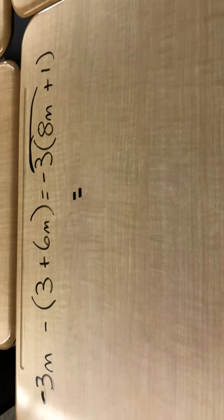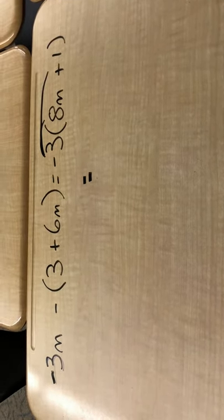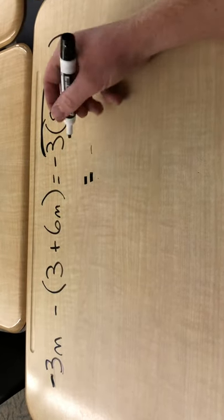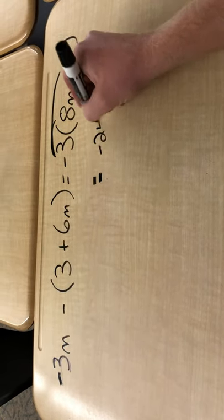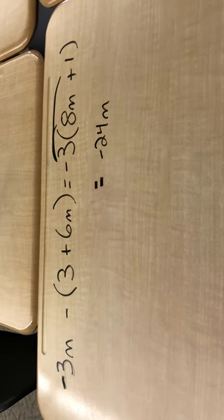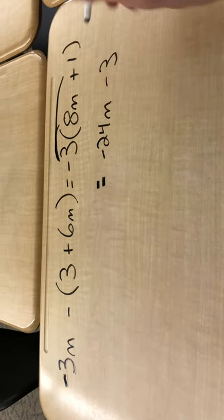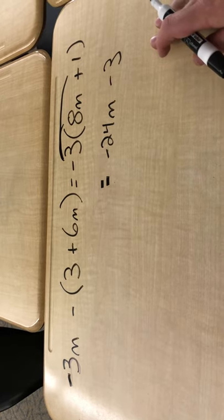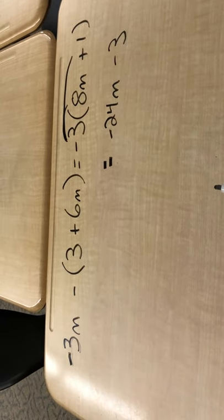I'm going to simplify that. Negative 3 times 8m, well, negative and positive, that's negative 24m. Okay, the negative 3 times positive 1 is just negative 3. These are not like terms, obviously, because there's no variable over there, so I'm done on the right side.